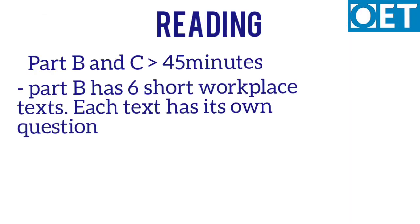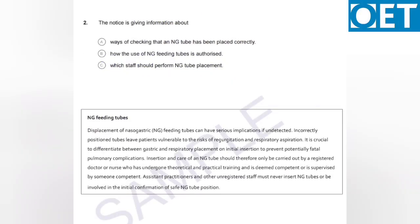After that, your countdown for parts B and C will start, and you have to complete both parts in 45 minutes. Part B has six short workplace texts, and each text has its own question. You can see the text alongside the question — for example, on NG feeding tubes — and your answer will be found within that text. The other five questions of part B follow the same pattern.